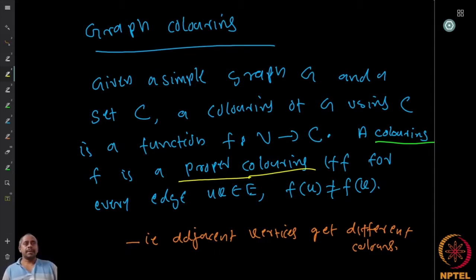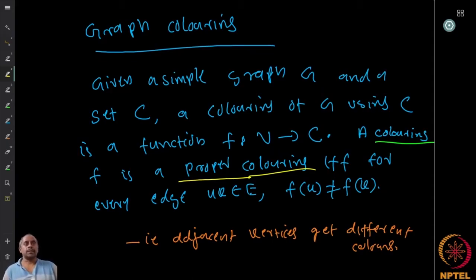A vertex coloring is what we immediately think of when we say graph coloring. There are other notions — edge coloring, face coloring — but when we say coloring it is usually vertex coloring. Most of the time we write 'coloring' to mean proper coloring of vertices, where adjacent vertices get different colors. If we are using a coloring which is not proper, we will mention it explicitly.